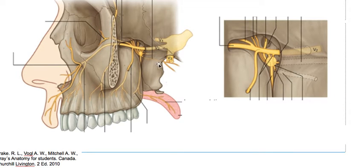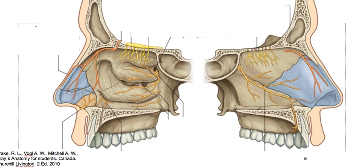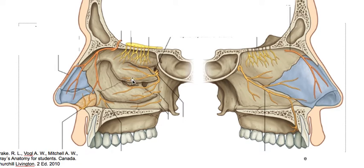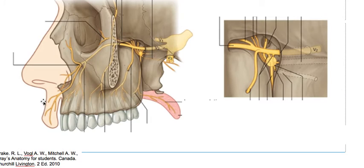Then we have the pharyngeal branches — this small one is the pharyngeal branch. We have the zygomatic branches, which are not part of the ganglionic branches and only innervate the skin. And we have the nasal branches that pass through the sphenopalatine canal together with the sphenopalatine artery. Here we have the posterior superior medial nasal branches of the nasal nerves. From the pterygopalatine ganglionic branches we have nasal, palatine, and pharyngeal branches.